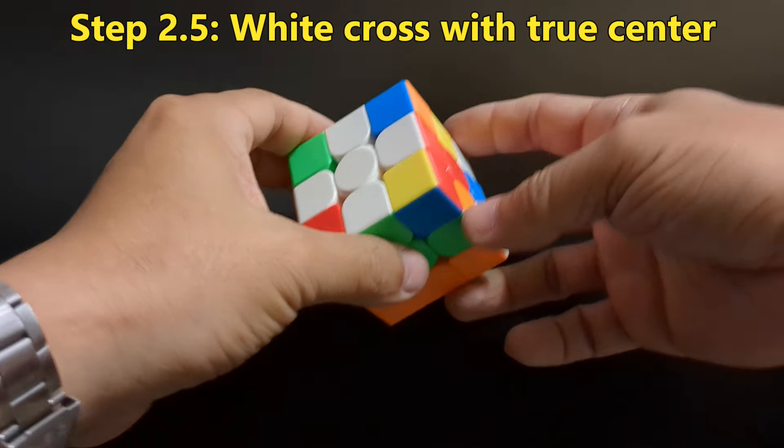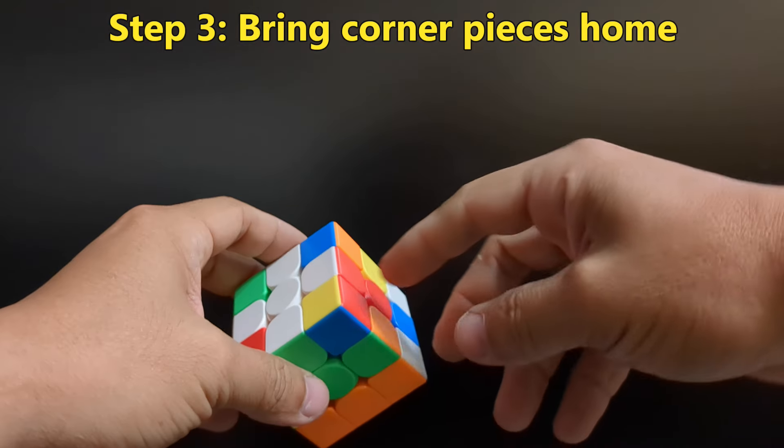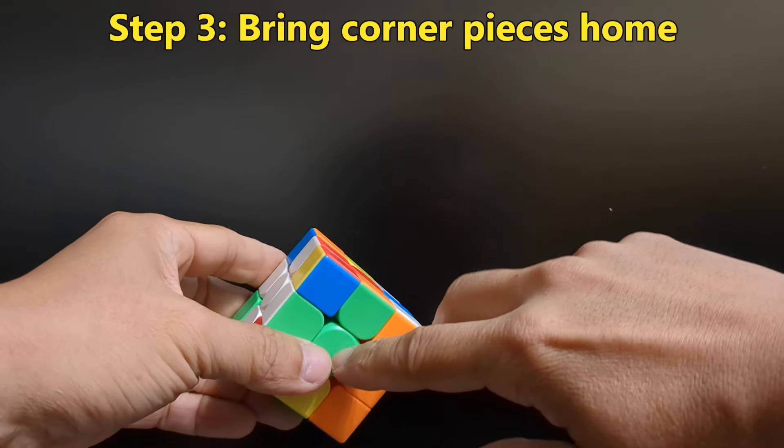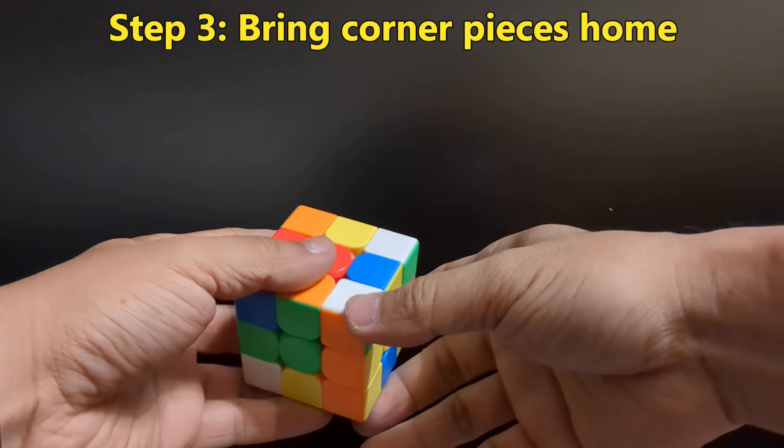Now the third step, just fill in the corners. Now the corners, there's really no trick to it. So if you notice there's a green and a red here. We need to find the one with the white, green, red.